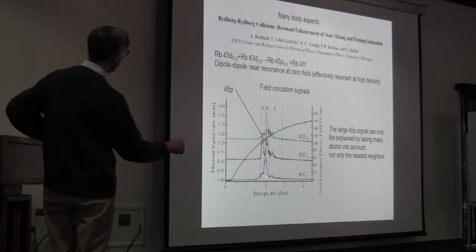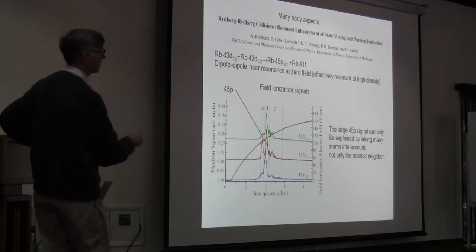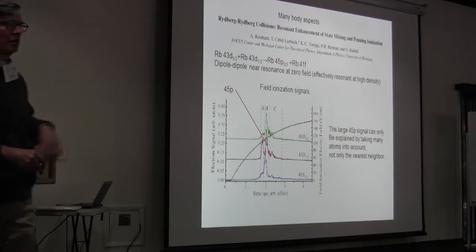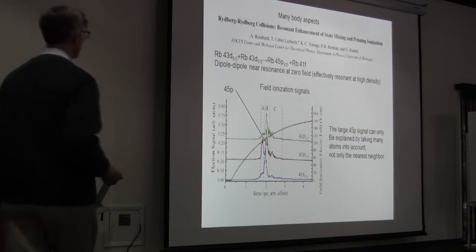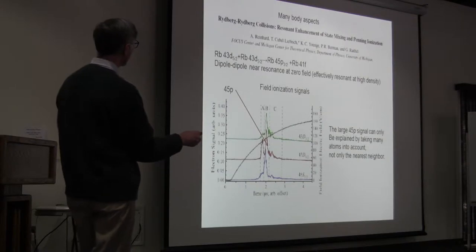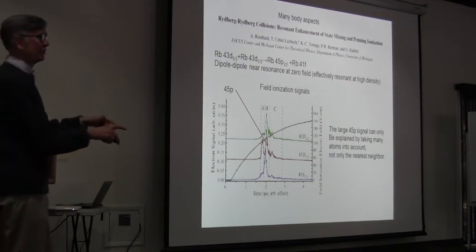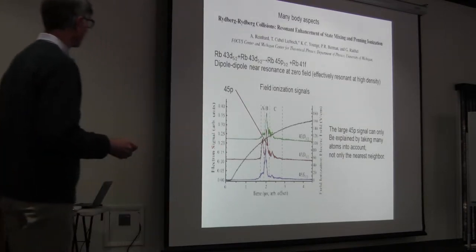Here in 45s, they basically see this sharp peak here. From 43d bypass, they see something earlier right here, which corresponds to the field ionization of the 45p state. Of course, you would expect that you would see something like this because of the dipole-dipole crash. However, you can't explain how big this is by just taking into account pairs of atoms. You have to take into account more than just the pairwise interaction.